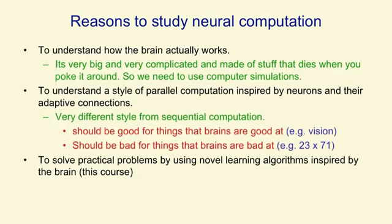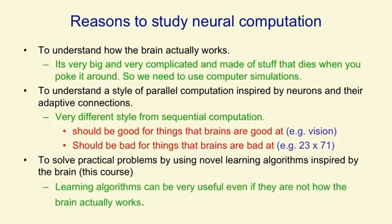This style should be very good for things that brains are good at, like vision, and it should also be bad for things that brains are bad at, like multiplying two numbers together. A third reason, which is the relevant one for this course, is to solve practical problems by using novel learning algorithms that were inspired by the brain. These algorithms can be very useful, even if they're not actually how the brain works.